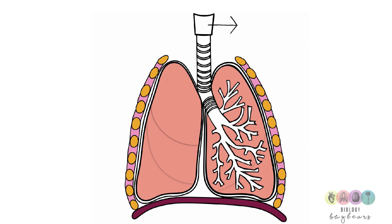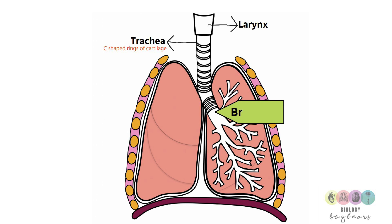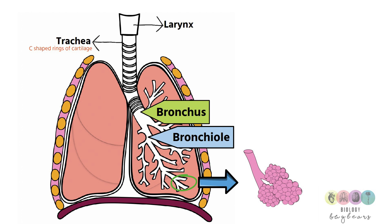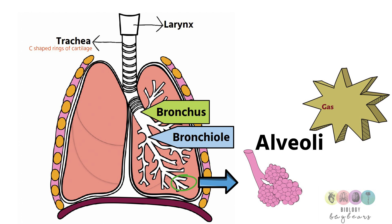A good place to start is by practising labelling diagrams — something like this might appear in your exam. There's your larynx, then you have your trachea which is your windpipe, and you can see those C-shaped rings of cartilage that prevent the inward collapse. The trachea branches into two bronchi, each called a bronchus, which further divides into the bronchioles. At the end of the bronchioles are the alveoli — little sacs where gas exchange takes place. Oxygen passes through the walls of the alveoli into the blood capillaries, and carbon dioxide passes from the blood capillaries through the walls of the alveoli into the lungs where it is exhaled.